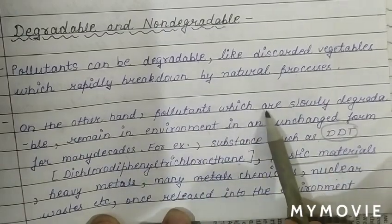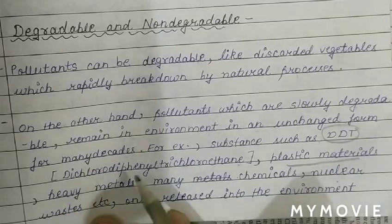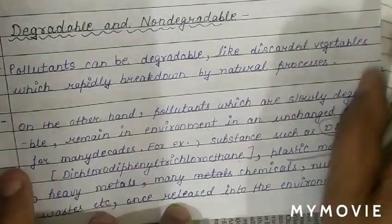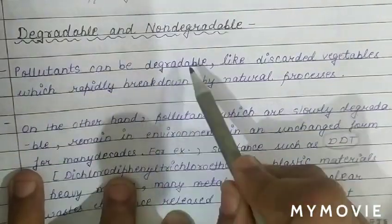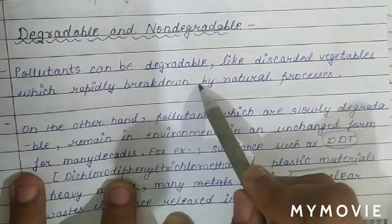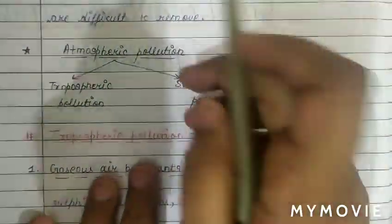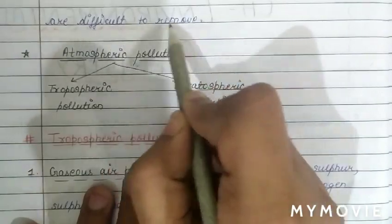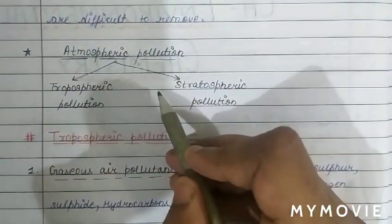Non-degradable pollutants remain in the environment in an unchanged form for many decades and are difficult to remove. Degradable pollutants, like discarded vegetables, rapidly break down by natural processes.